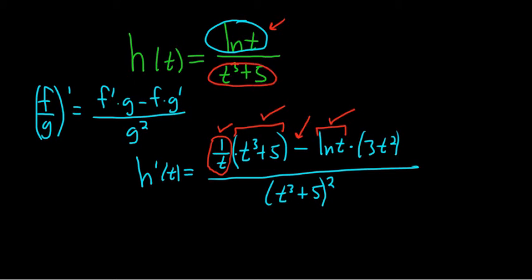And then this derivative here, well, the derivative of 5 is 0, and then this derivative is 3t squared via the power rule. Looks good so far.